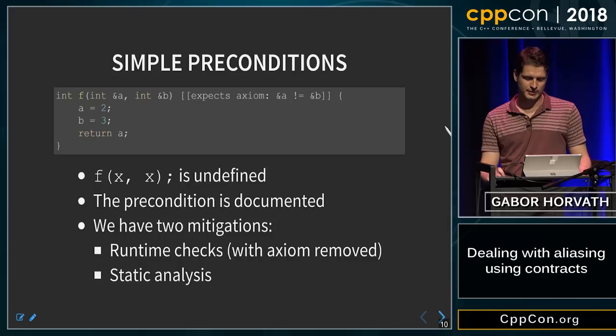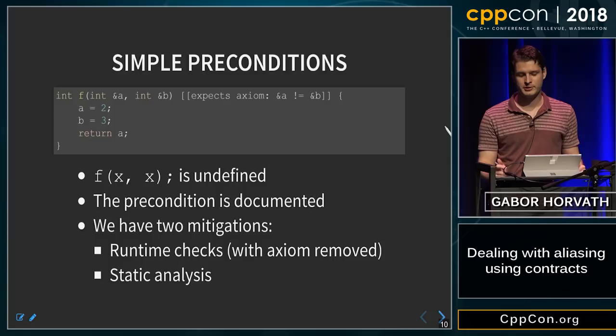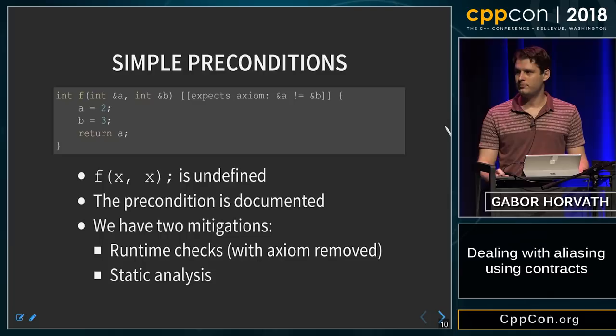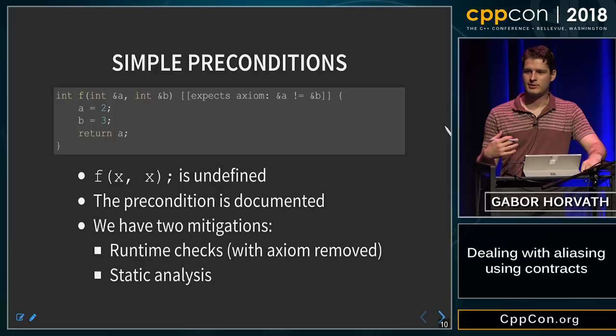If the caller has code like this, we have two mitigations: we could either have runtime checks if we use contracts in a way that asks the compiler to insert them, or we can use this to aid static analysis tools that can help us catch this kind of error. So while we have a new way to introduce undefined behavior, at the same time we have a way to mitigate the problems this might cause.